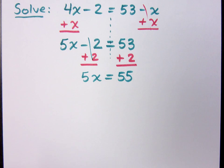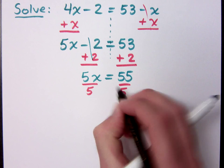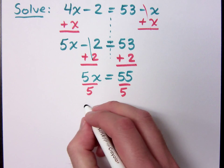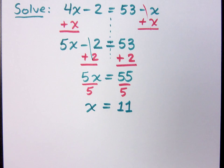And now this is that single step equation that we had before. So we can divide both sides by 5. What does x equal? Like a boss, right?